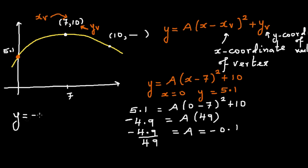So we can see the equation is y is equal to minus 0.1 times x minus 7 the whole squared plus 10.